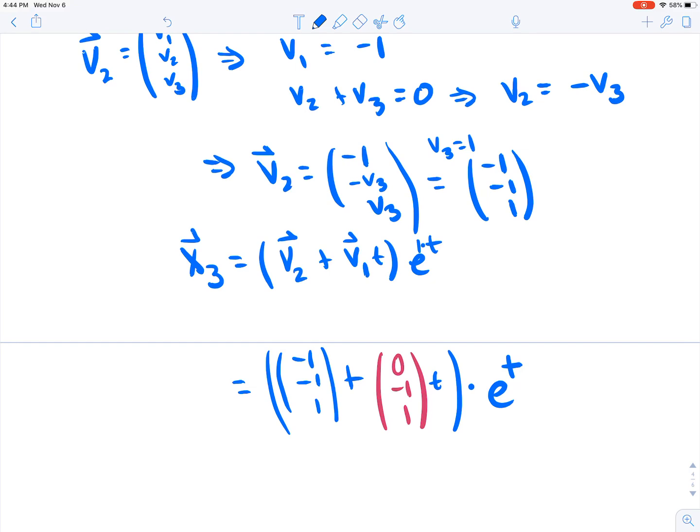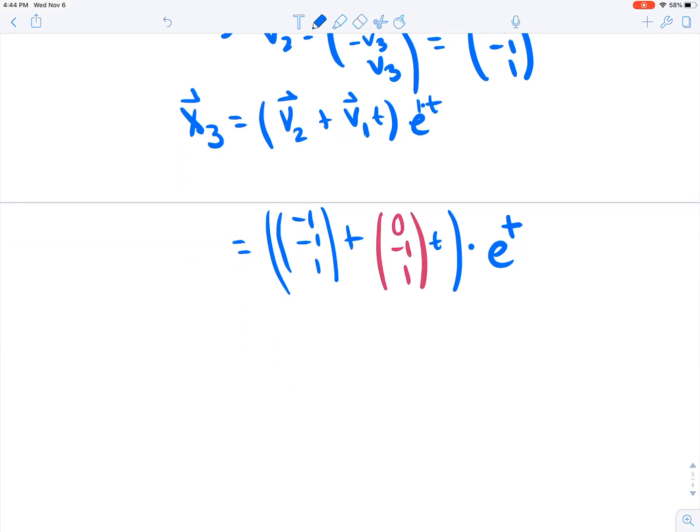So there you go. This is your third linearly independent solution from the previous ones. And what do you do with these? Well, the general solution is going to be all linear combinations of x1, x2, and x3. So with some constants, you go ahead and add them up, and there you go. This is your solution.